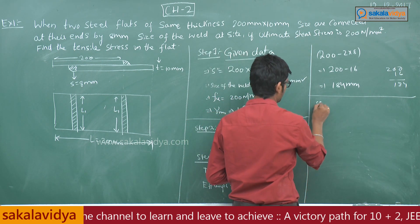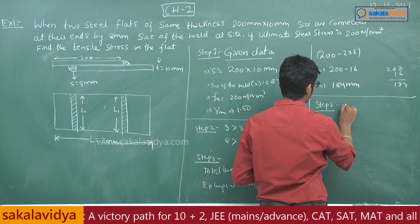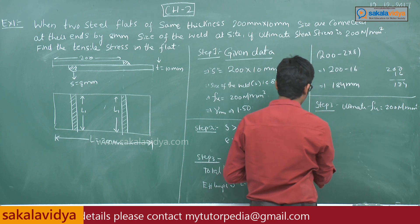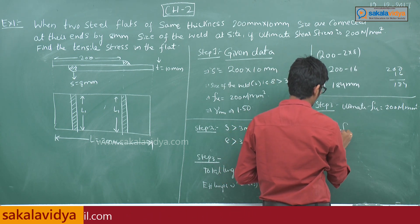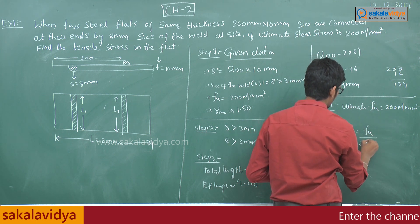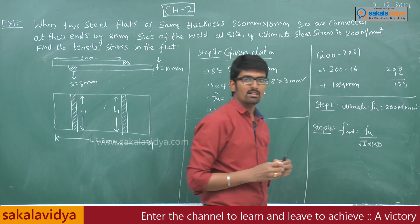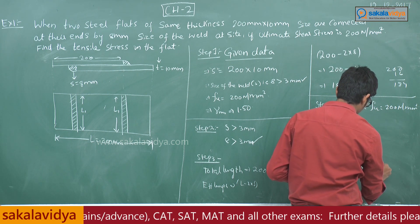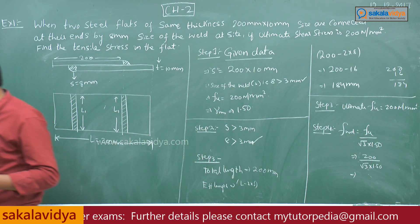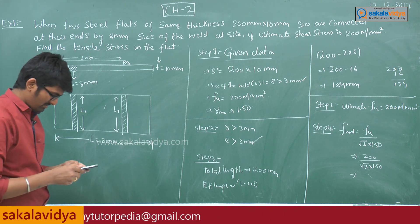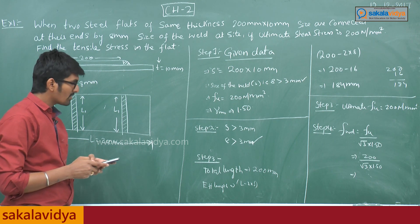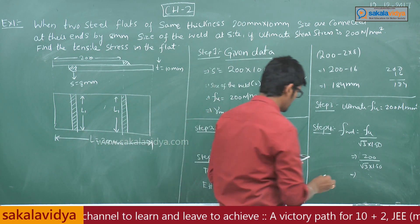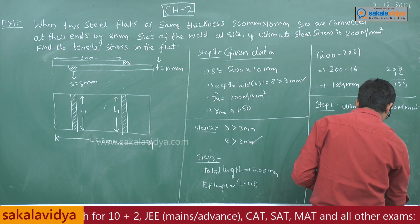Step 3: The ultimate shear stress fu is 200 Newton per mm square. Step 4: Design stress, fwd, is equal to fu divided by root 3 into 1.50, because the welding is on the net side. So 200 divided by (root 3 × 1.50) gives 76.98 Newton per mm square.